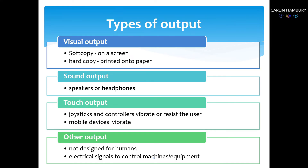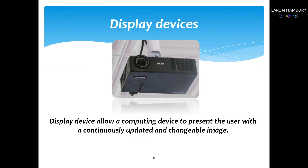There are different types of output. You get soft copy — when we're looking at a document on screen. When a document is printed out and you can touch it, that is known as hard copy. Sound output is like our speakers. Touch output is like our joysticks and mobile devices. There are other forms of output as well.